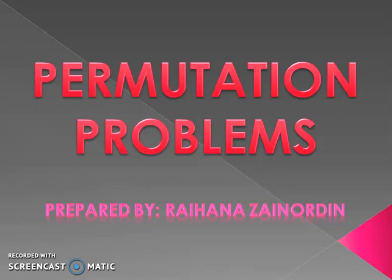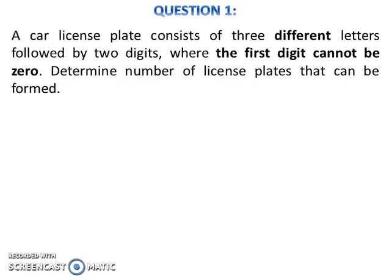Permutation Problems. Let's look at question 1. A car license plate consists of 3 different letters followed by 2 digits, where the first digit cannot be zero. Determine the number of license plates that can be formed.